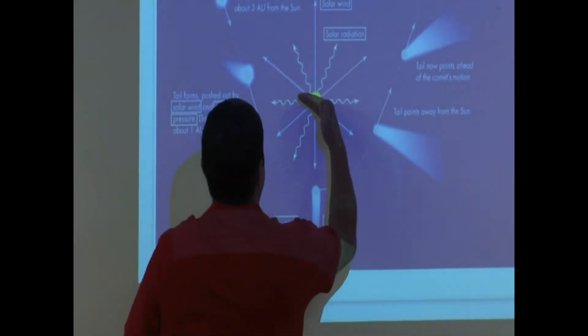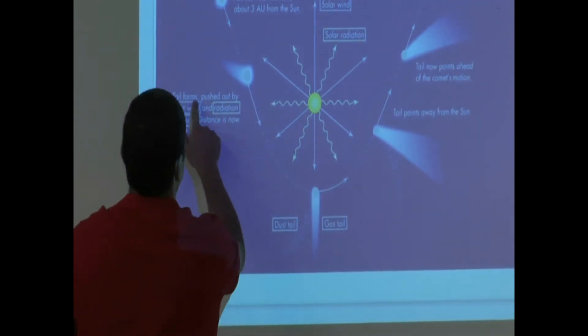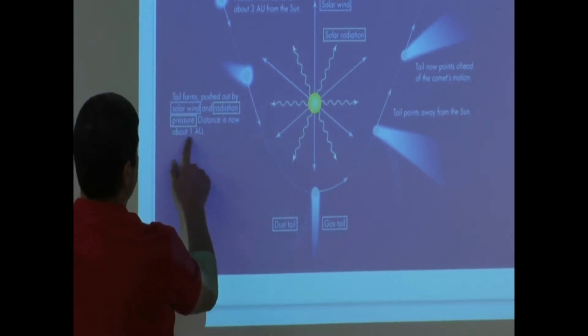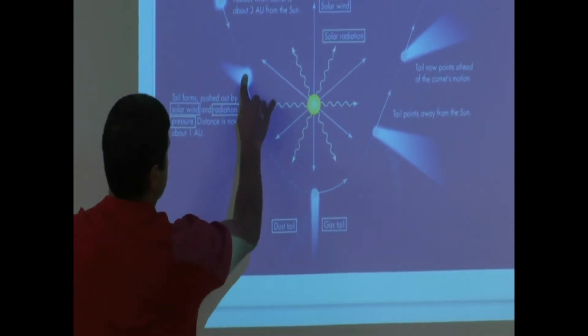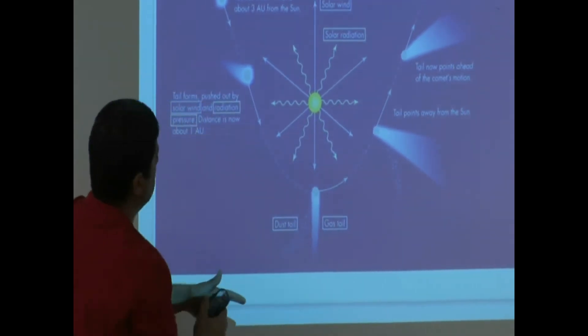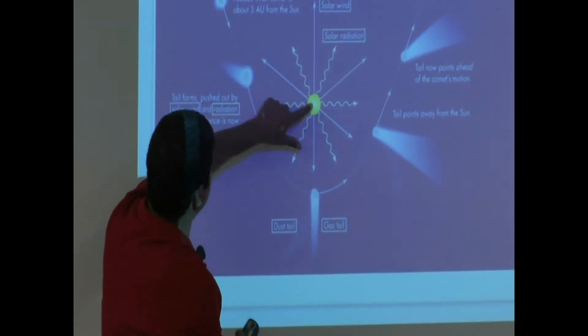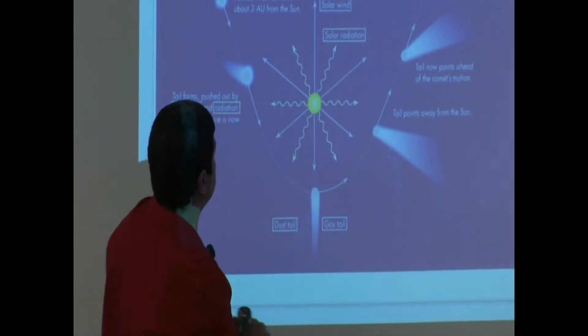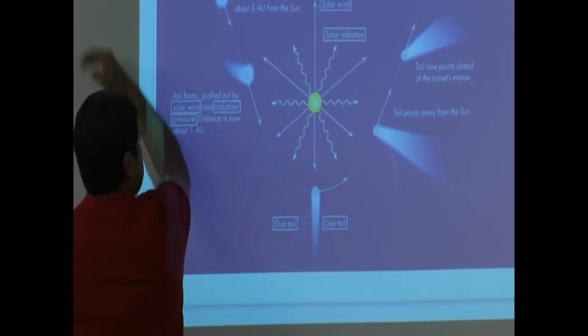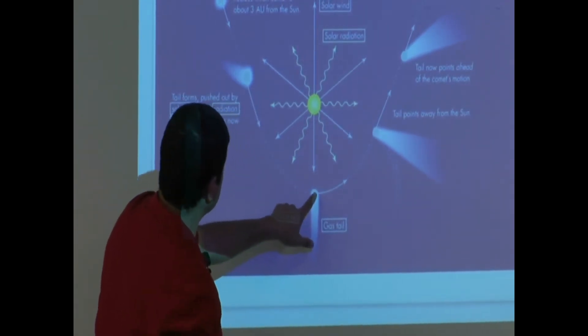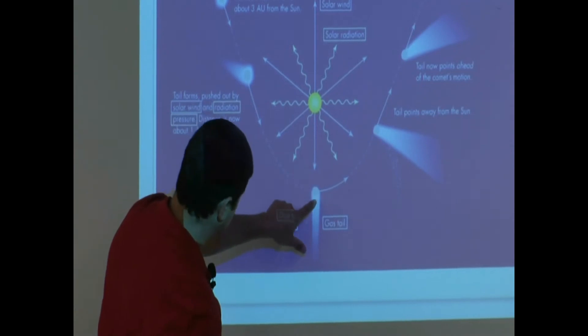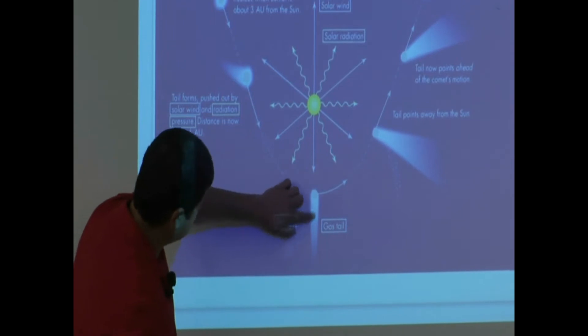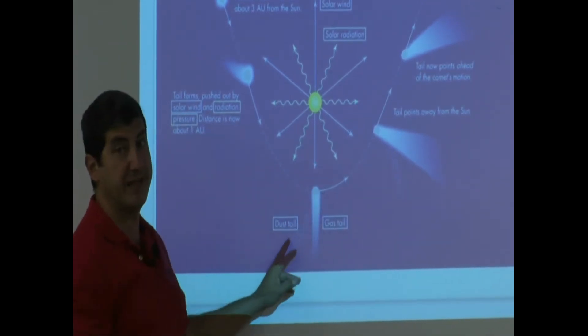The sunlight, the solar energy, is pushing it. The tail forms pushed out by solar wind and radiation pressure. Distance is now about 1 AU, the distance from the comet to the sun. And this arrow that they drew is the solar wind, and then this one that they're drawing is solar radiation. So the solar wind is pushing it away like that. When the comet is getting even closer, you see here the gas tail now is very, very long, and then this is the dust tail.